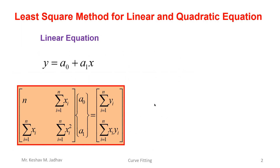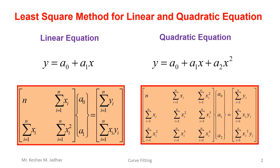In previous videos I explained the least square method for linear and quadratic equation curve fitting. In linear curve fitting the equation format is y = a0 + a1*x, and we find values of a0 and a1 from a given dataset by calculating summation x, summation x², summation y, and summation x*y, then solving the resulting matrix. In quadratic curve fitting we fit data in a higher-order equation format and solve a 3×3 matrix for a0, a1, and a2.